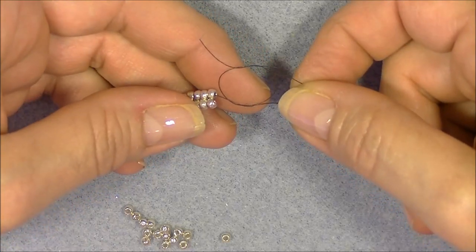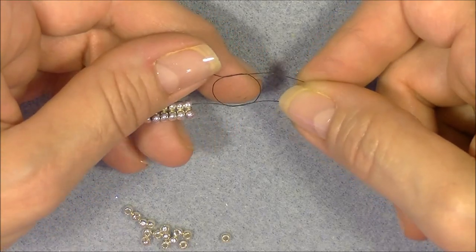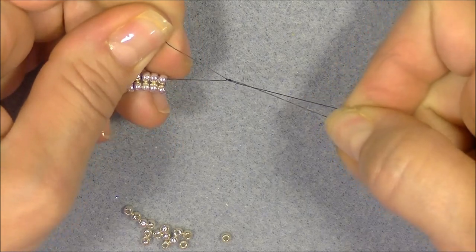So all I am doing is tying a square knot. Now I'm going to pull this knot down like so.